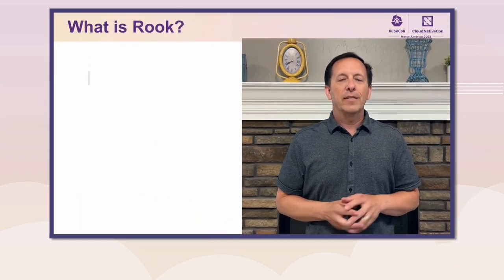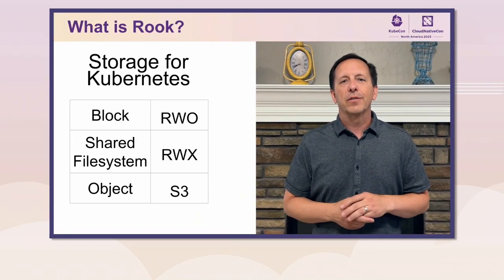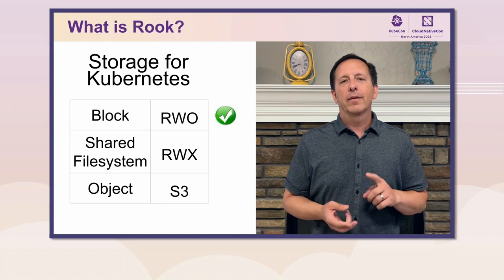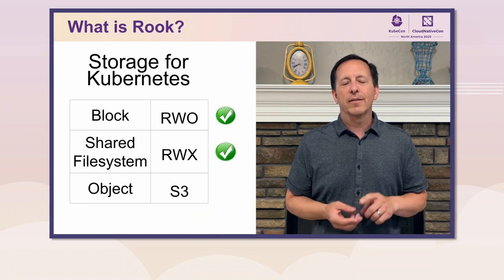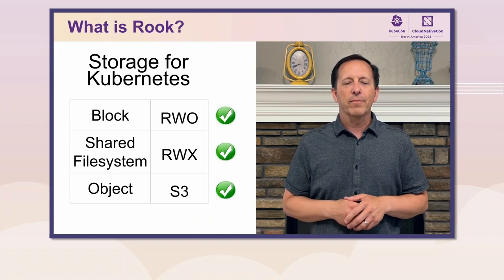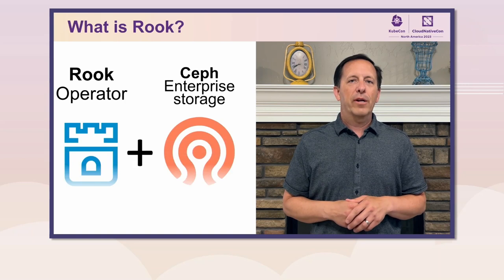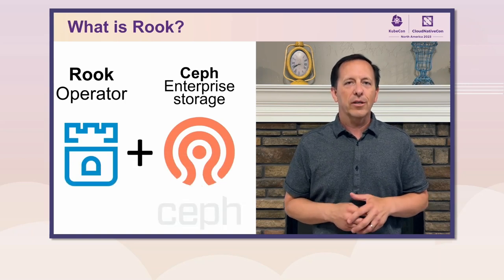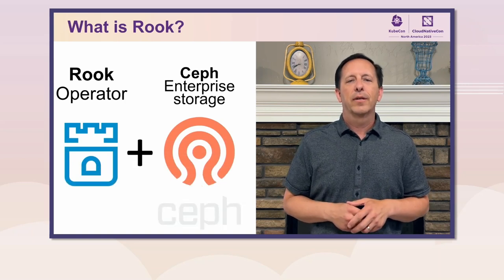Hi, I'm Travis Nielsen, Rook maintainer, here to talk about storage for Kubernetes. Rook provides three types of storage for your applications: block, shared file system, and object — all on a single platform. Rook operator deploys Ceph, which is enterprise storage and has been in production for many years.